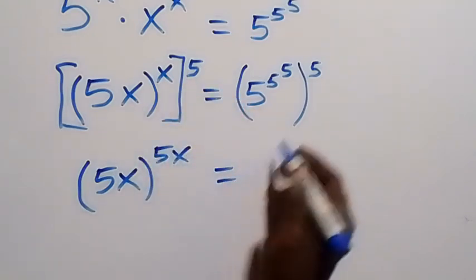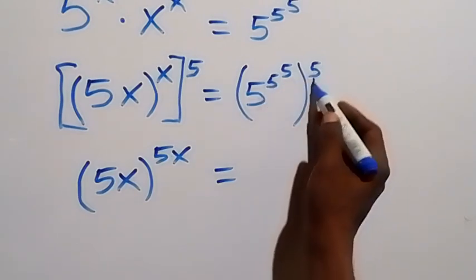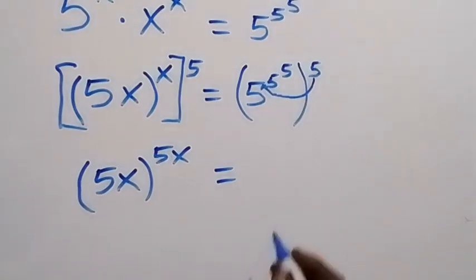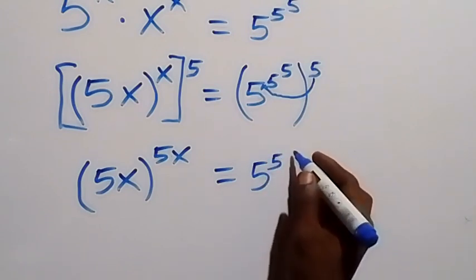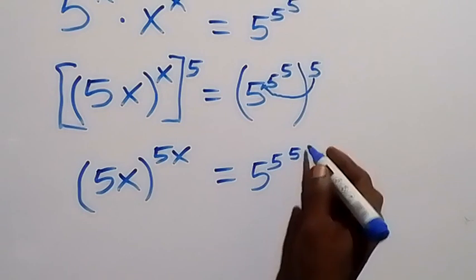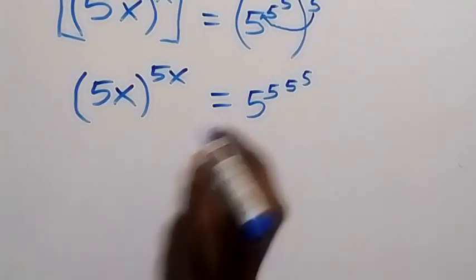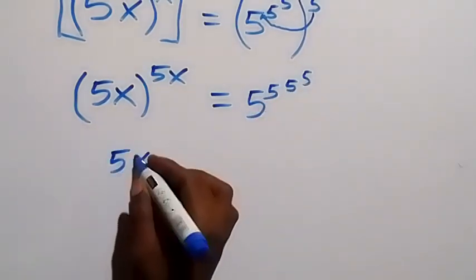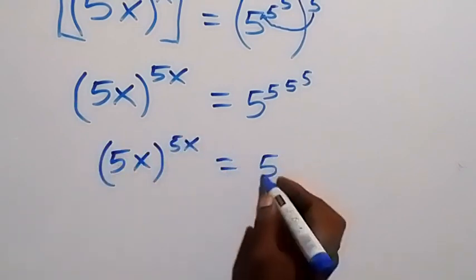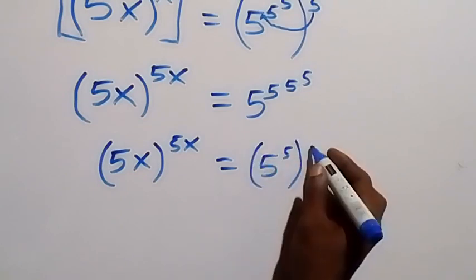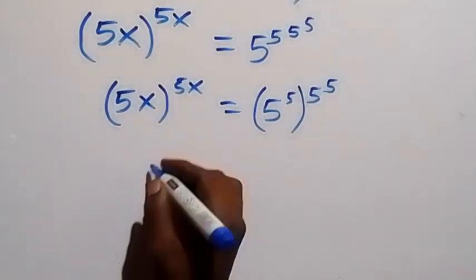On the other side, the powers multiply and we get 5 raised to power 5, then raised to power 5, raised to power 5. We can separate this using brackets, giving us 5x raised to the power of 5x on the left, and 5 raised to power 5, raised to power 5, raised to power 5 on the right.